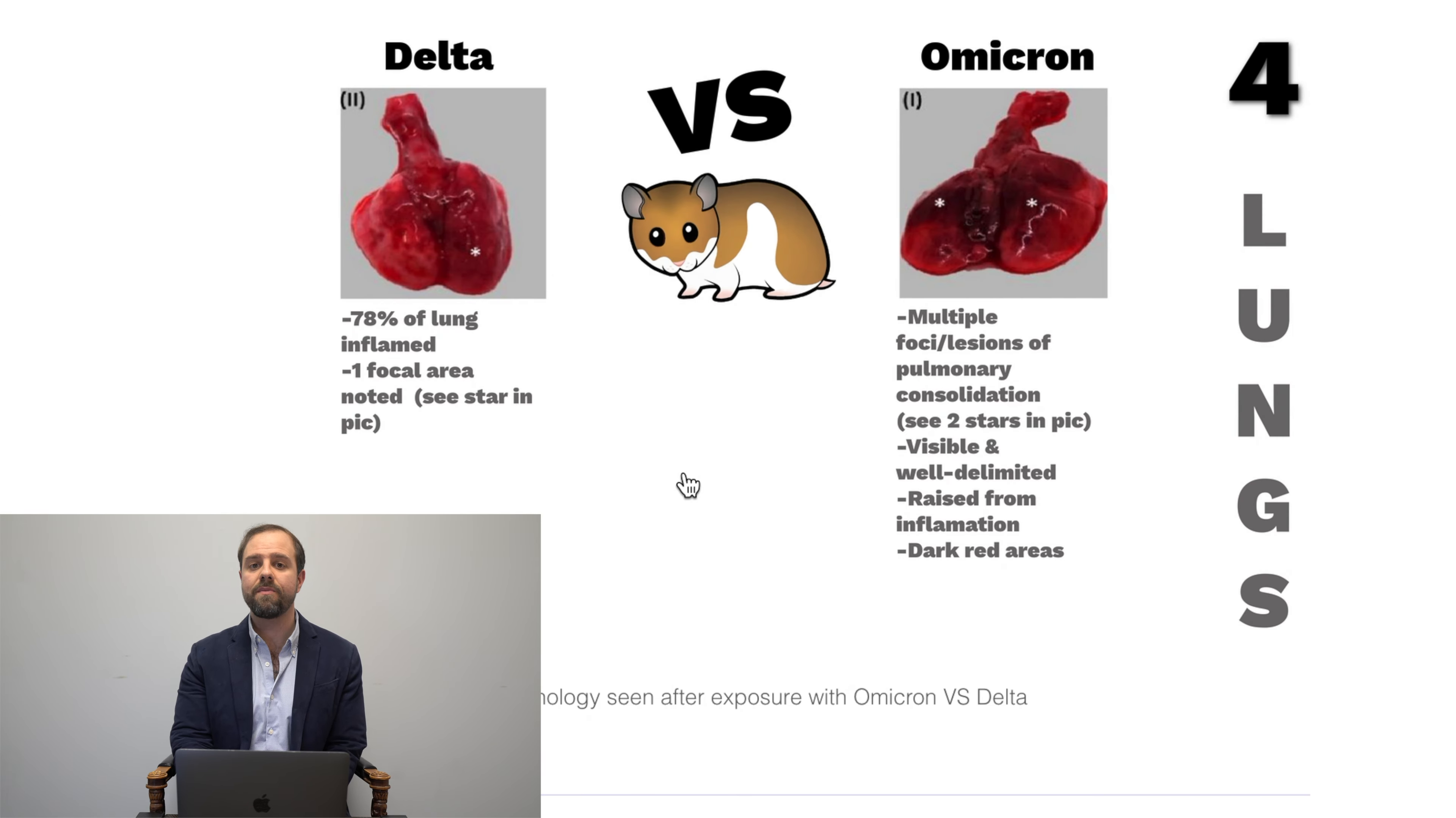Okay. Lungs. We already talked about this, but here's a bigger visual for you. The point is Omicron infected hamsters experienced somewhat similar pathology to Delta infected hamsters. However, those with Omicron experienced more foci formation on average, more dark edematous inflamed red areas and raised areas, which affected up to 90% of lung tissue.